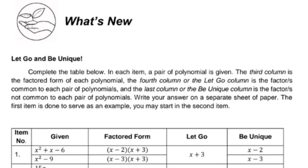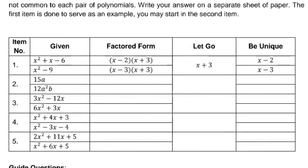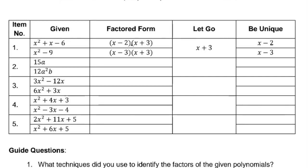Write your answer on a separate sheet of paper. The first item is done to serve as an example; you may start at the second item. The given expressions are x squared plus x minus 6 and x squared minus 9. The factored form of x squared plus x minus 6 is (x minus 2)(x plus 3). The factored form of x squared minus 9 is (x minus 3)(x plus 3). For the 'let go' column, the common factor is x plus 3. For the 'be unique' column, the non-common factors are x minus 2 and x minus 3. Can you do items 2, 3, 4, and 5?